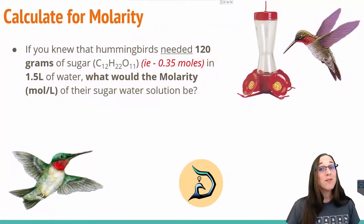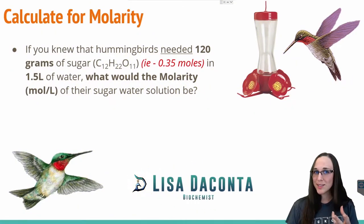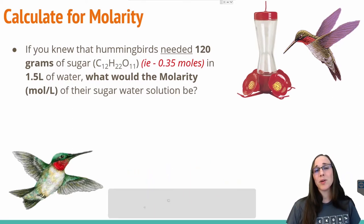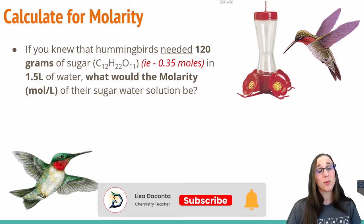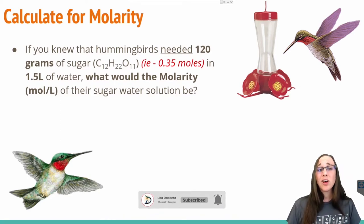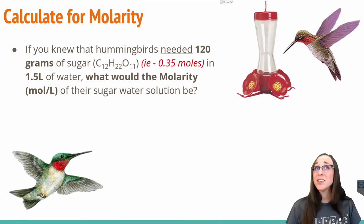The topic of dilution in this lesson is going to revolve around the concept of hummingbird feeder, so sugar water. Before we can dilute the sugar water, we first need to figure out what the molarity of the sugar water would be. Let's say we took 120 grams of sugar and we dissolved it in some water, 1.5 liters of it. We want to know what the molarity of that would be.